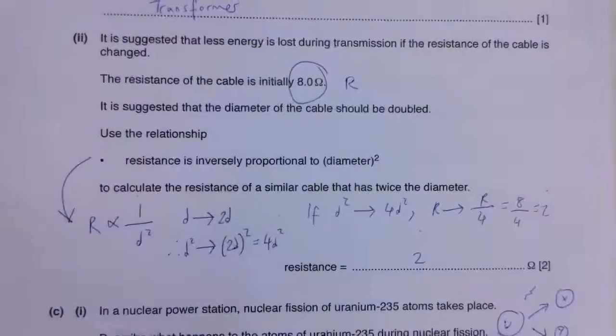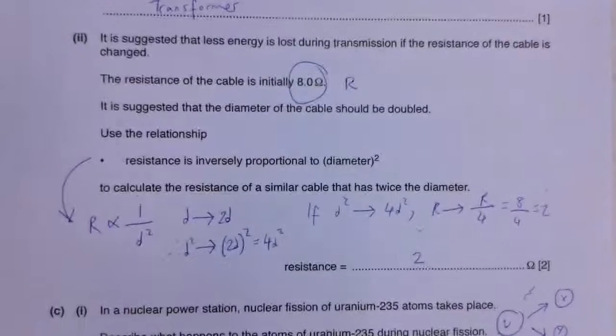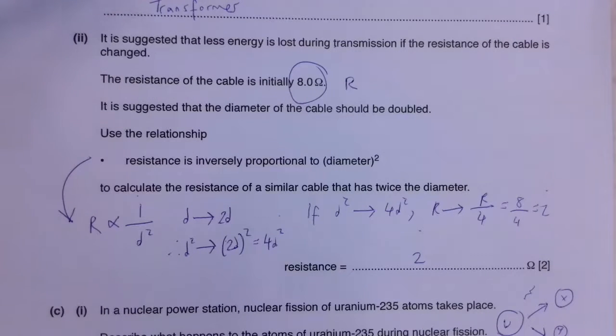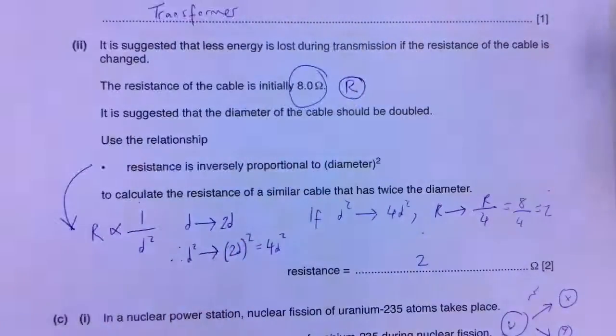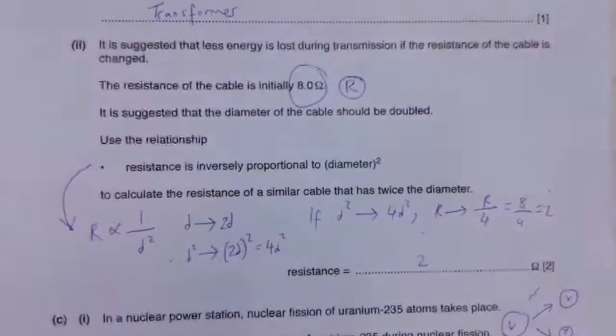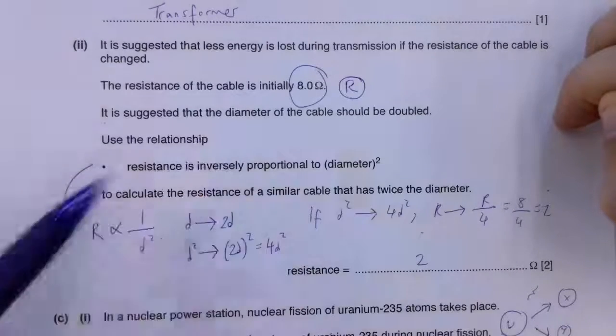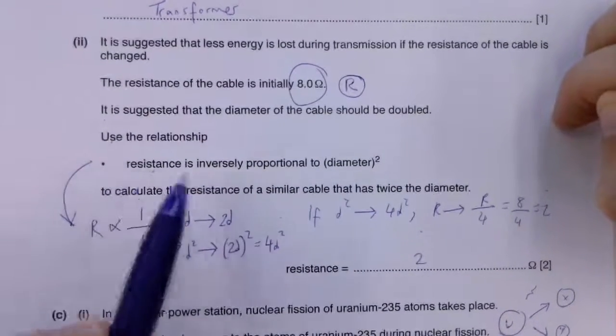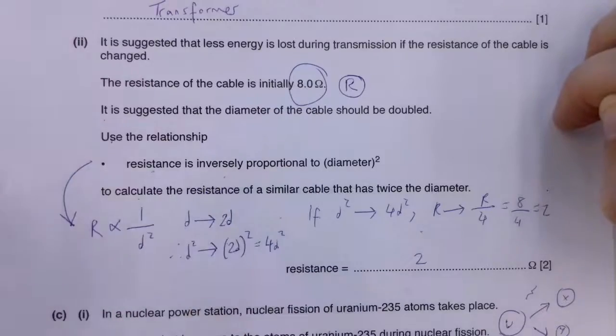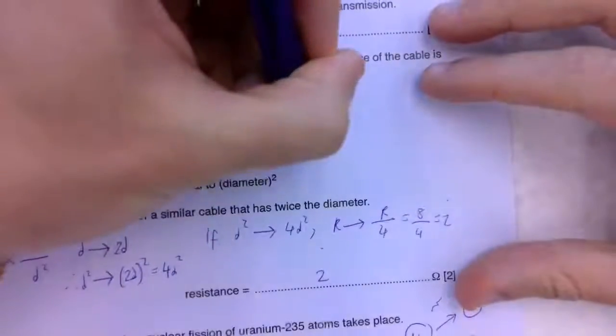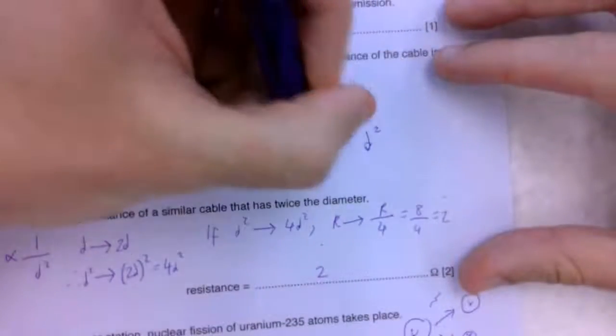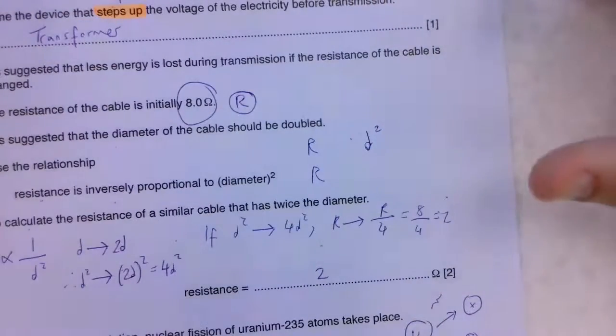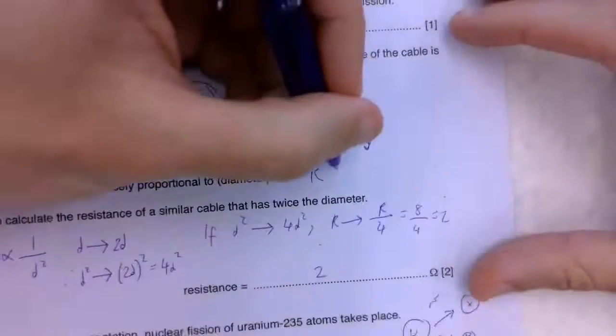It suggests that less energy is lost during transmission if the resistance of the cable is changed. We've got an 8 ohm resistance and I encourage you to draw a symbol, tell me where it is, tell me what you know. It suggests that the diameter of the cable should be doubled. Use the relationship where resistance is inversely proportional to diameter. Here I just want to invert diameter squared. So we've got R and D squared.